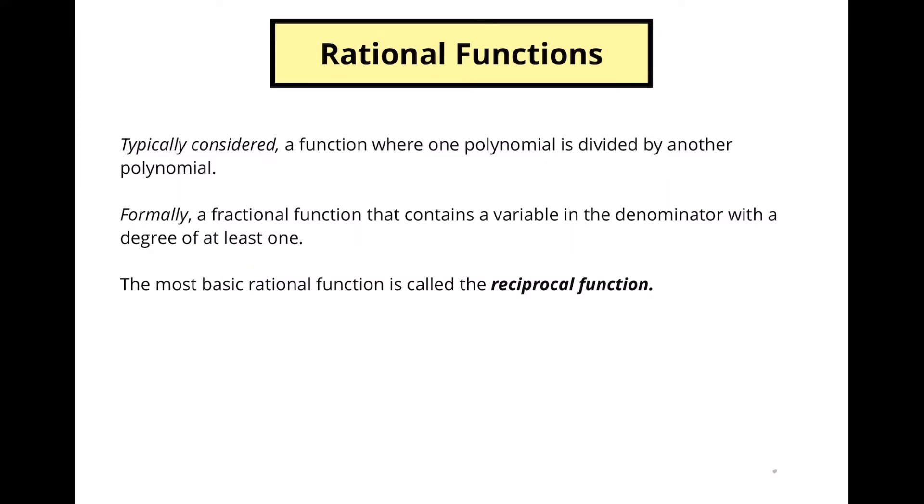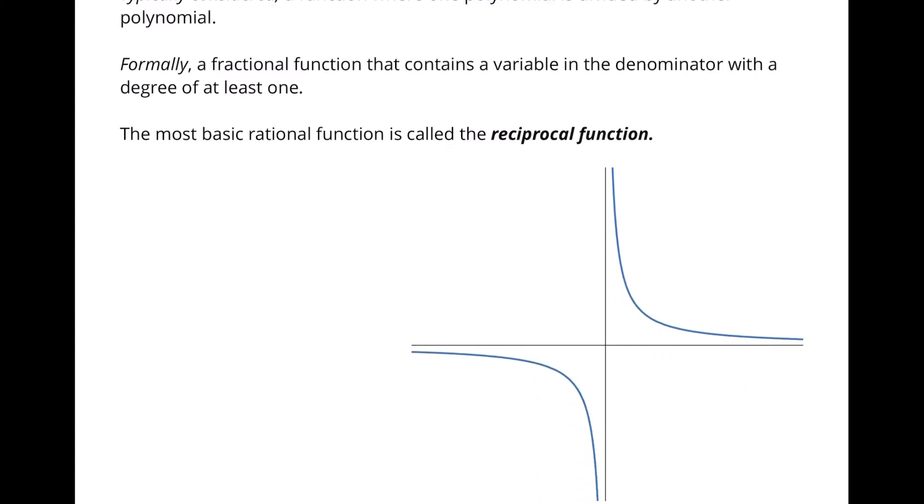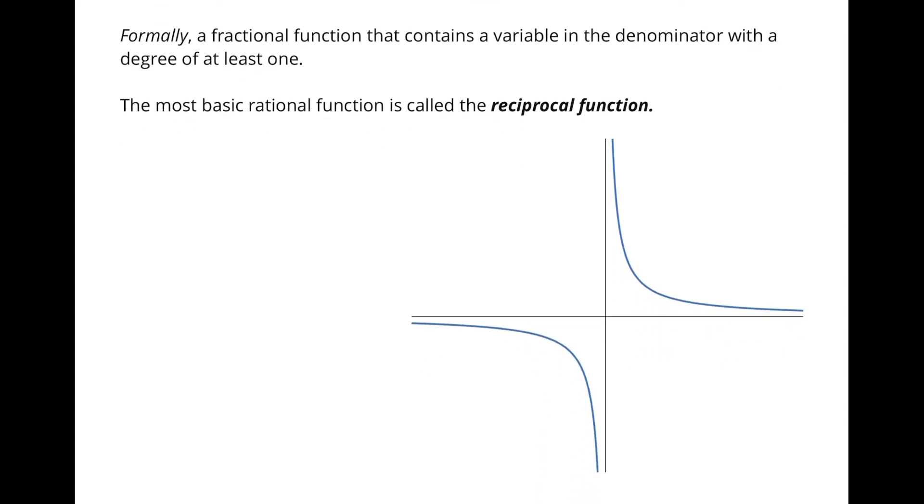So the most basic type of rational function is called a reciprocal function. This is a reciprocal function. And typically we'll write this function as k over x. So this is that variable in the denominator with a degree of at least one. So this is x to the first power. k just represents some constant.